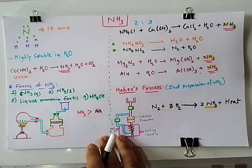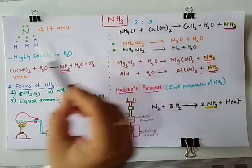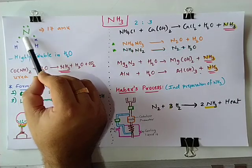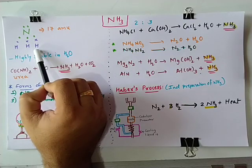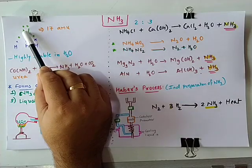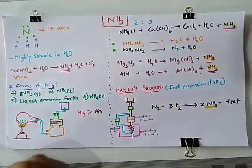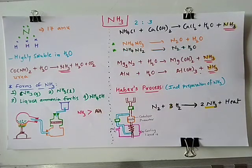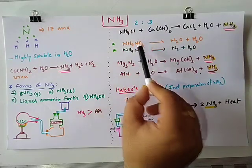We are going to start the new chapter on ammonia, having the formula NH3. Nitrogen can easily share its three electrons with hydrogen to make a covalent bond, and the molecular mass is 17 AMU — 14 for nitrogen and 3 for the three hydrogen atoms. Ammonia cannot be easily available in a major quantity in nature, so in a free state, ammonia is present in a very small quantity in air and water.